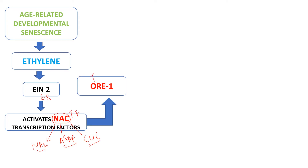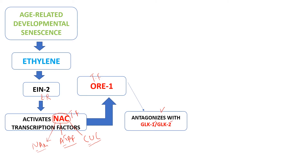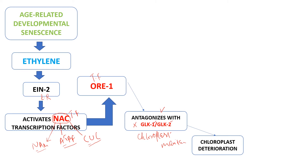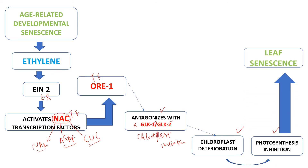ORE1 activates three downstream pathways leading to leaf senescence. In the first pathway, ORE1 antagonizes GLK1 and GLK2 — Golden 2-Like 1 and Golden 2-Like 2. GLK1 and GLK2 function as chloroplast maintainers. Since ORE1 antagonizes them, chloroplast maintenance is inhibited and chloroplast deterioration occurs, ultimately leading to leaf senescence.